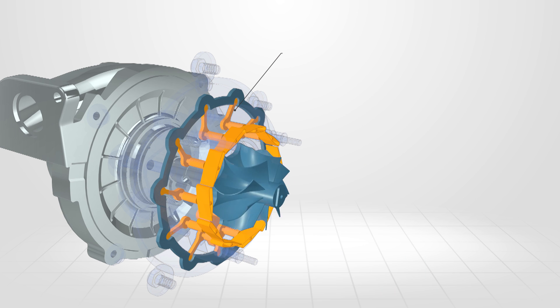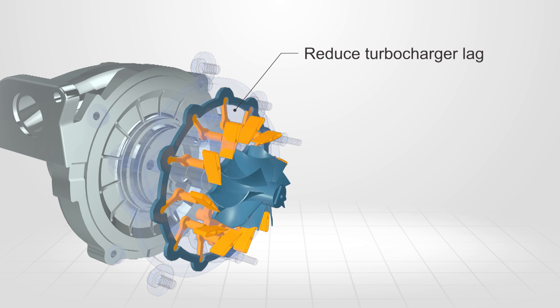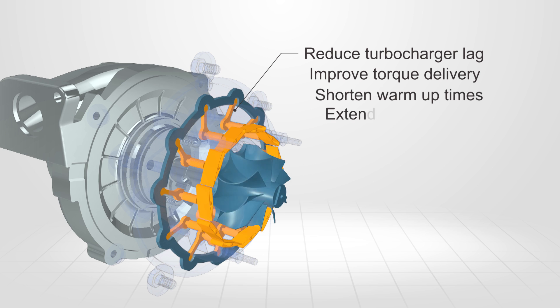The use of a variable geometry turbine is a clever way to reduce turbocharger lag, improve torque delivery, shorten warm-up times, and extend fuel economy.